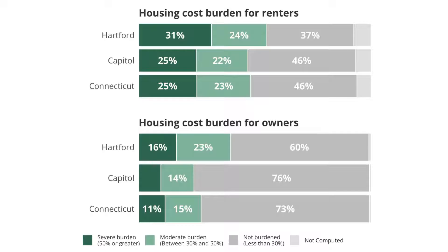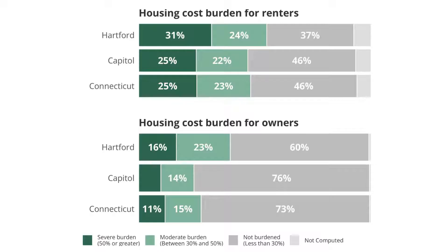What you're looking at now is the real chart. You can see it's got housing cost burden both for renters and for owners. Take a look all the way at the right side at that not computed section — instead of trying to fit the text label in and not having it work, we removed it altogether. In this video, I'll show you how to hide text labels with small values, which will help a lot to make your charts easier for your readers to comprehend.